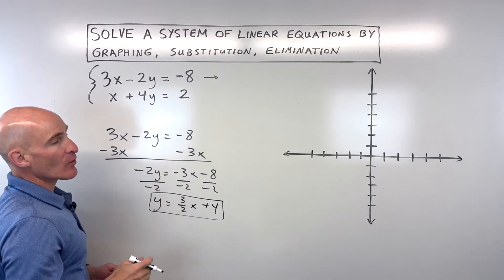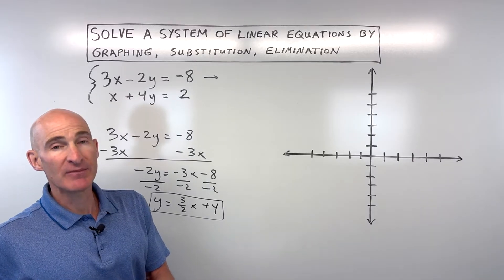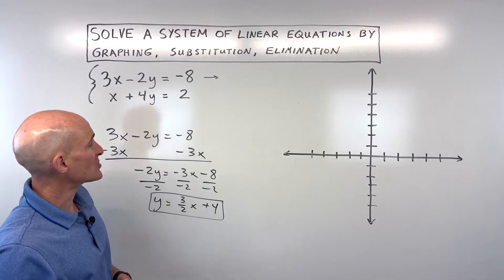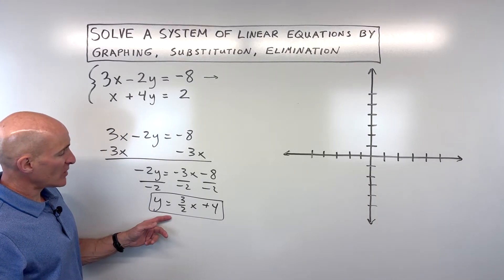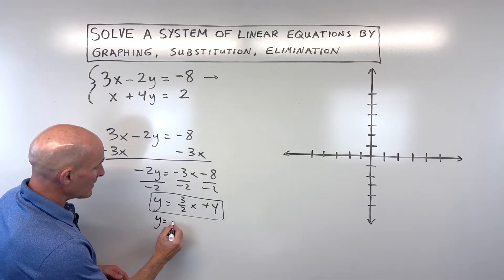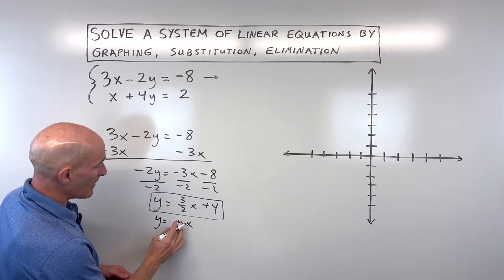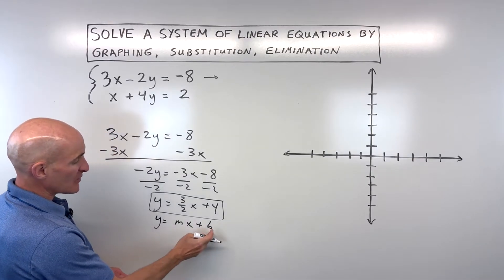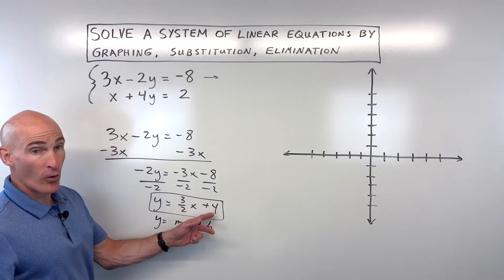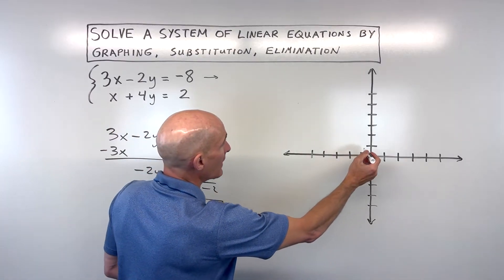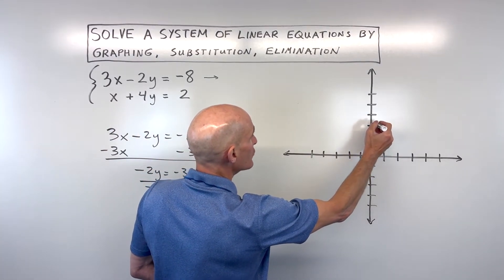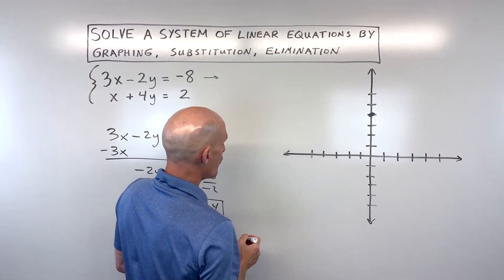Now, the second equation, we're going to graph this one by using the intercept method, and I'll show you that in just a second. But let's graph this one here first. So you can see that y equals the slope, which is m, in this case 3 halves, mx plus b. The b is the y-intercept, that's 4. So in this case, we're going to go to the y-axis. We're going to go up 4, 1, 2, 3, 4. Put a point there.